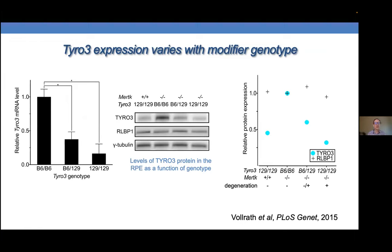When we looked at the level of Tyro3 expression in the RPE of MERTK double knockout animals, we saw that B6 homozygotes that were suppressed for the degeneration had a threefold higher level of expression than 129 homozygotes, and this translated to the protein level as well — again about a threefold difference. Importantly, even in animals that were not MERTK knockouts but were homozygous for the Tyro3 129 allele, Tyro3 expression was also down. This relationship between genotype and expression level is emblematic of an expression quantitative trait locus, or eQTL.